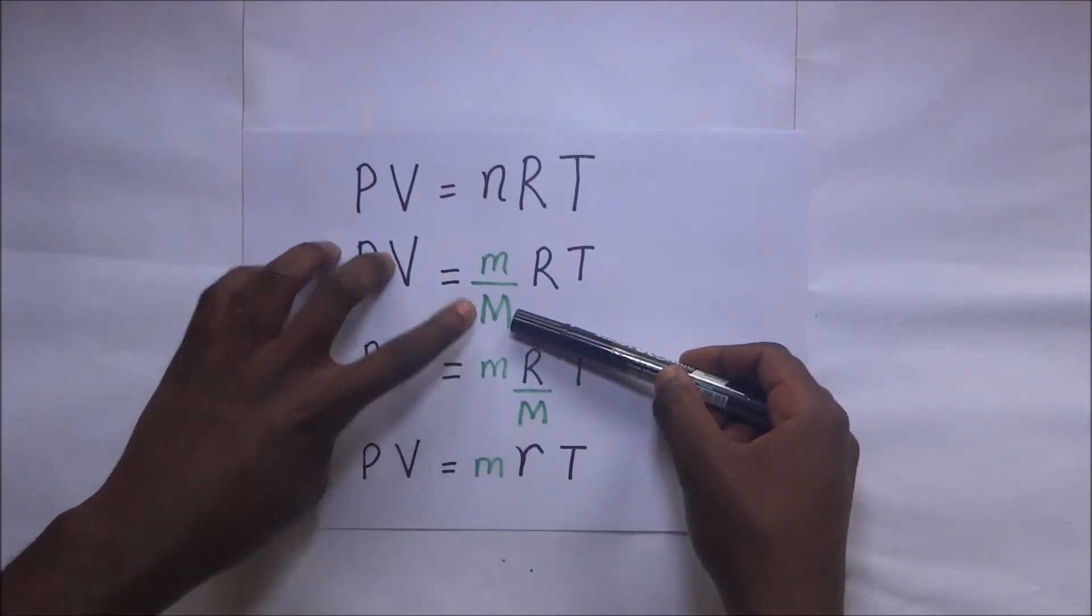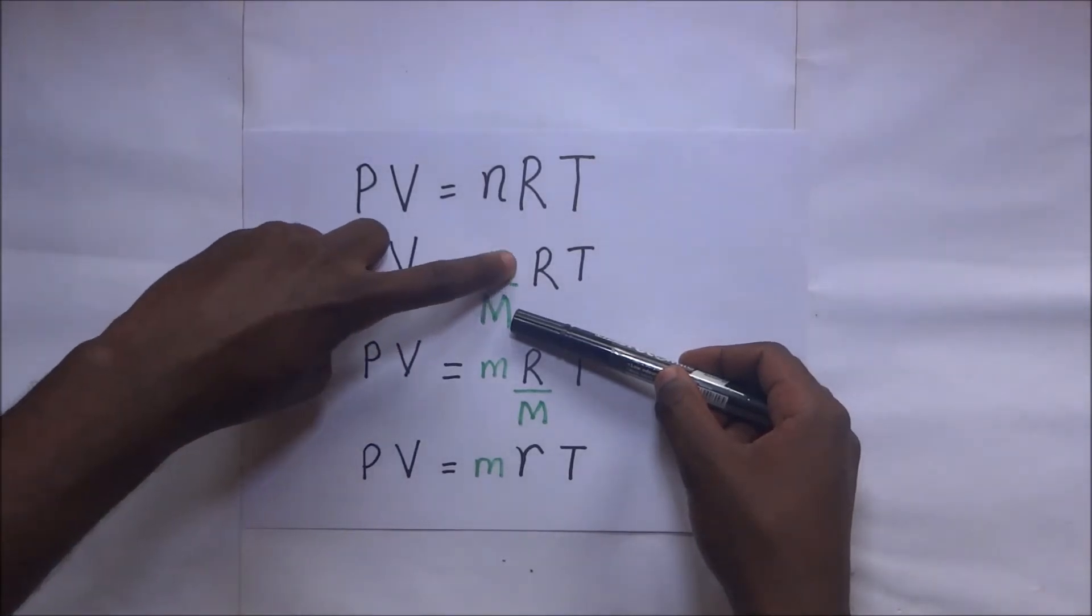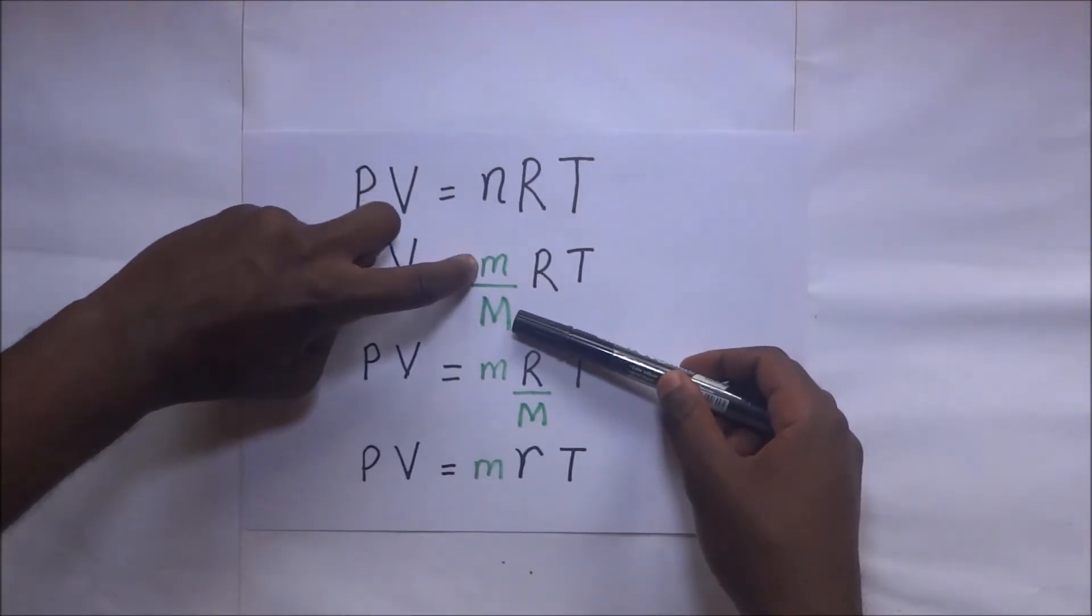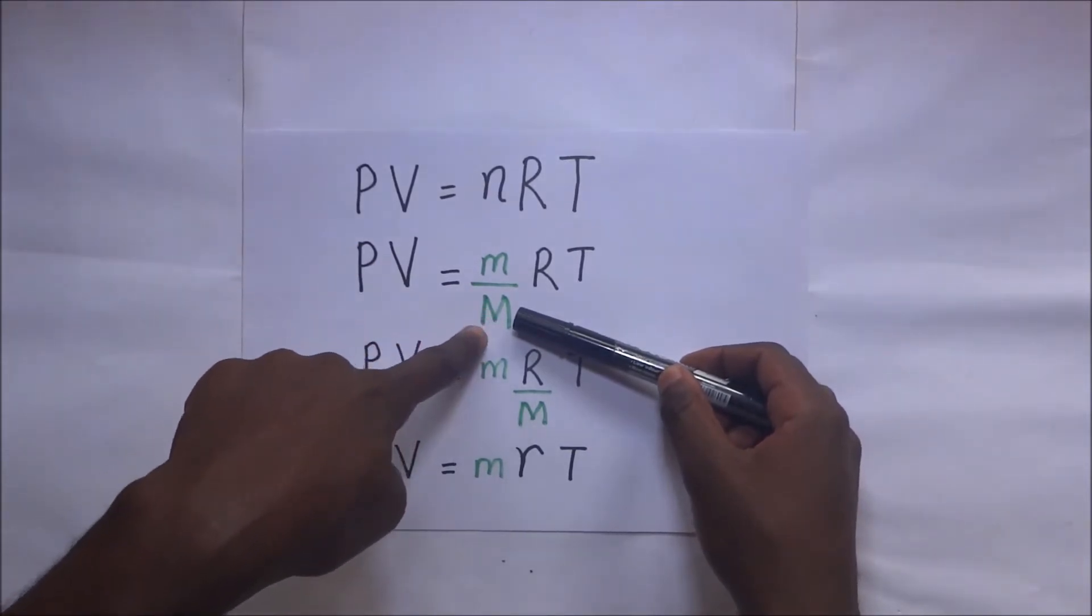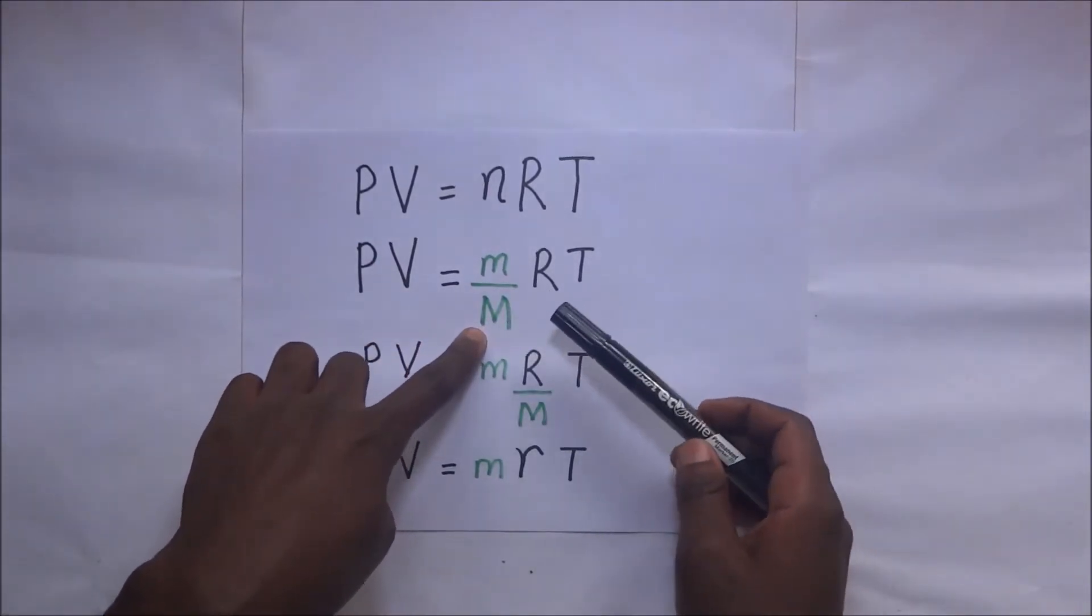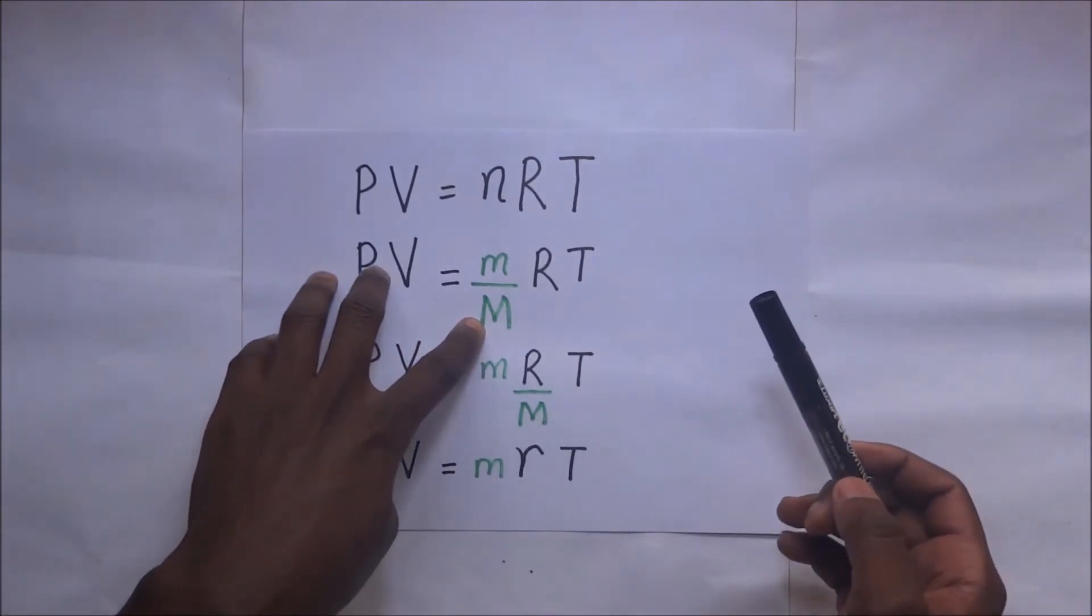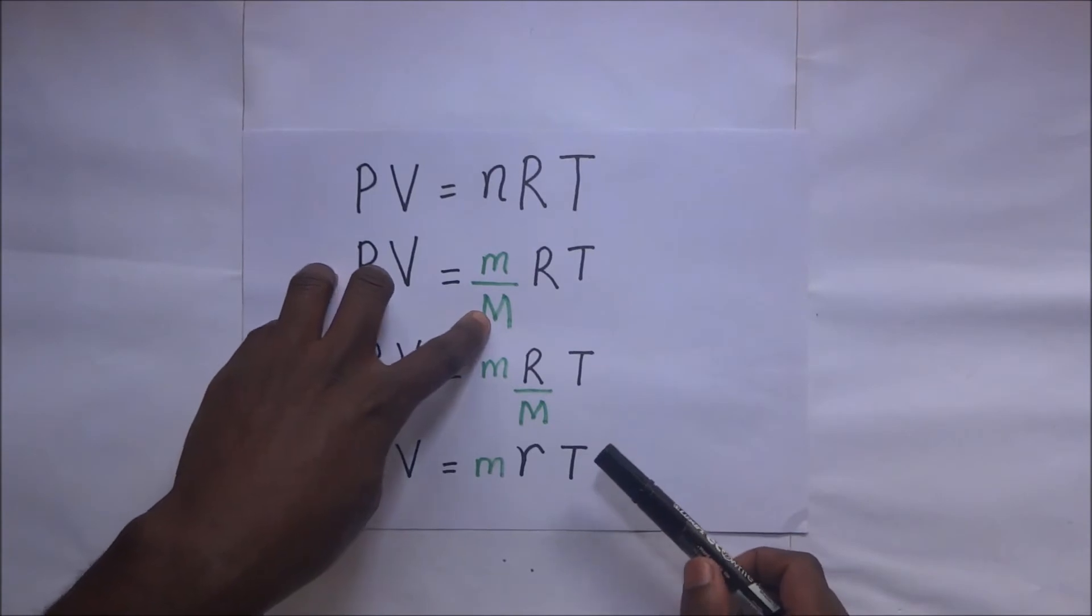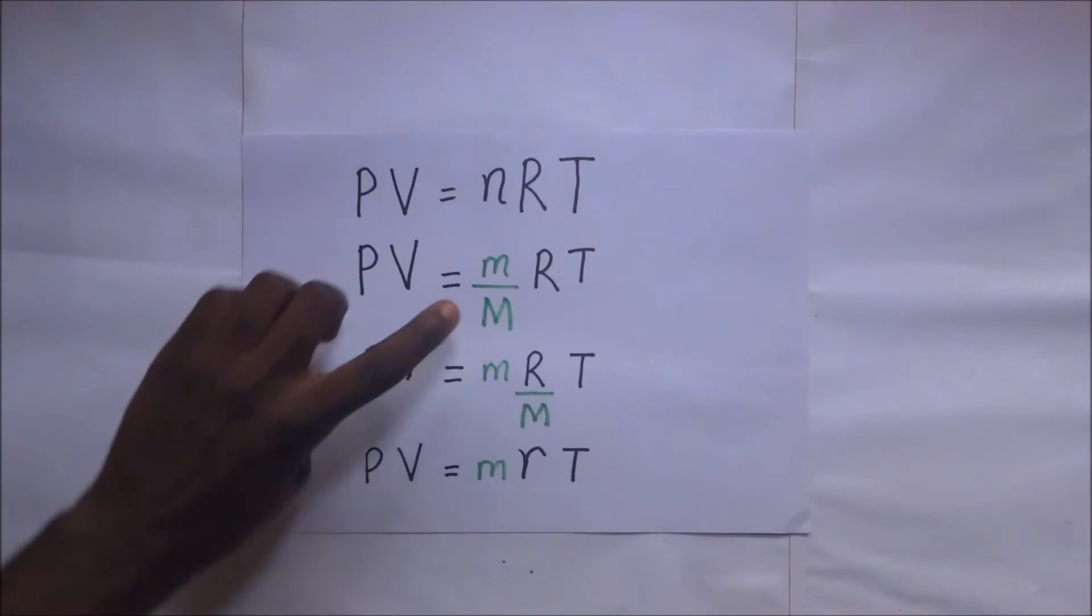So if you have 10 grams of a certain gas, it becomes 10 divided by the relative molecular mass of that specific gas. If the gas is oxygen, the relative molecular mass is 16. If it's carbon dioxide, you use the relative molecular mass of carbon dioxide, and so forth.